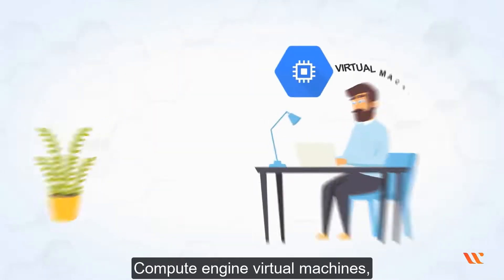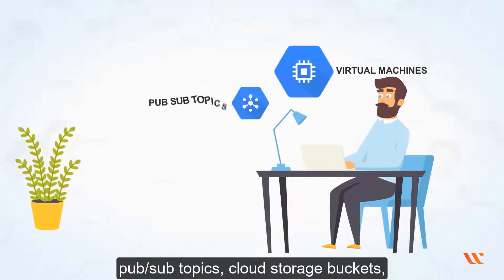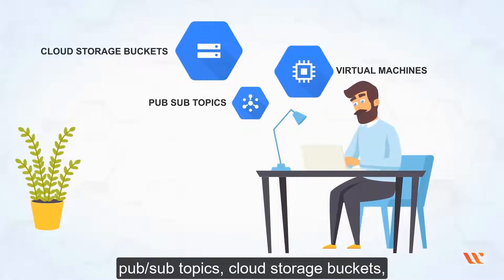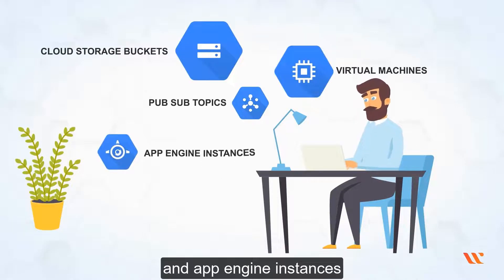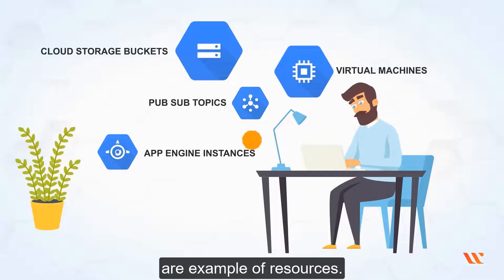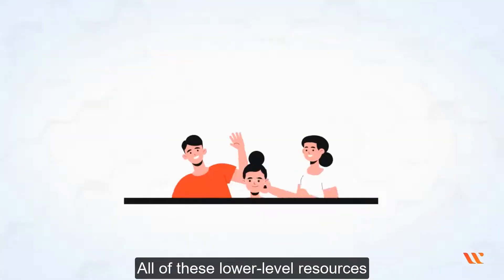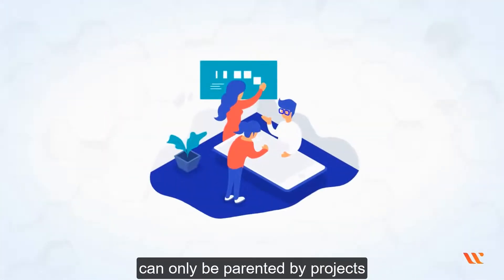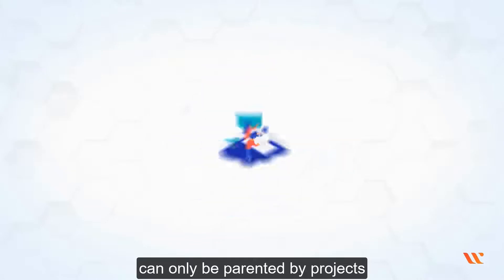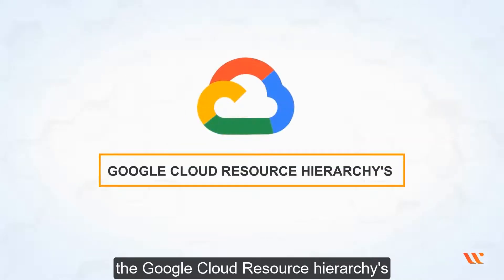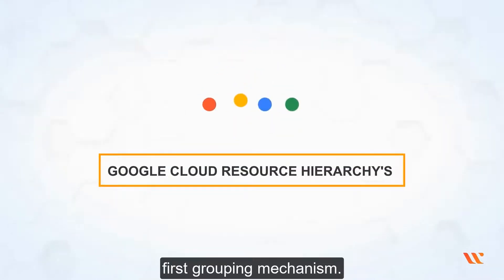Resources are the core components that make up all Google Cloud services at their most basic level. Compute Engine Virtual Machines, PubSub Topics, Cloud Storage Buckets, and App Engine Instances are examples of resources. All of these lower-level resources can only be parented by projects, which constitute the Google Cloud Resource Hierarchy's first grouping mechanism.